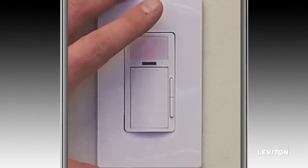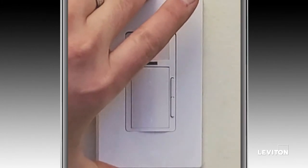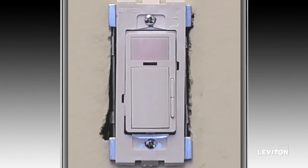First you'll need to remove the wall plate. If using a Leviton screwless wall plate, you'll also need to remove the plastic surround.